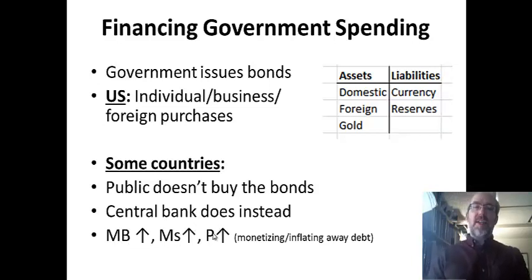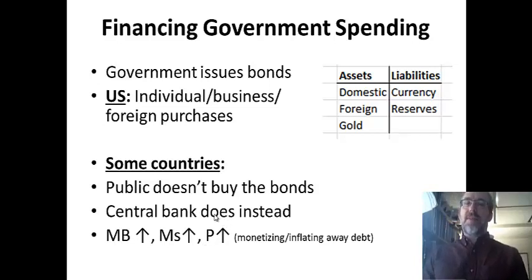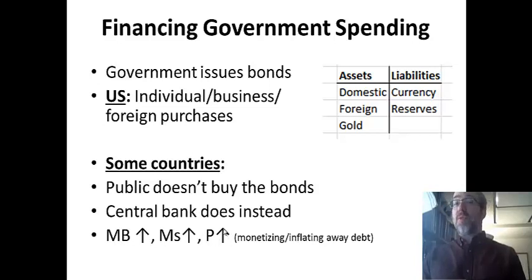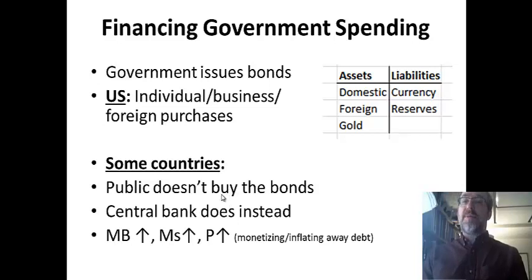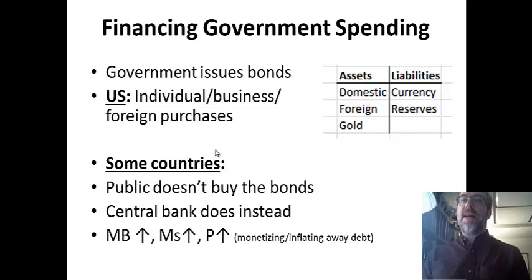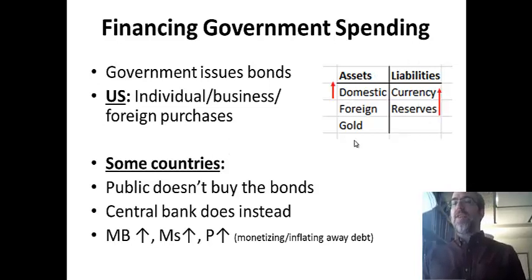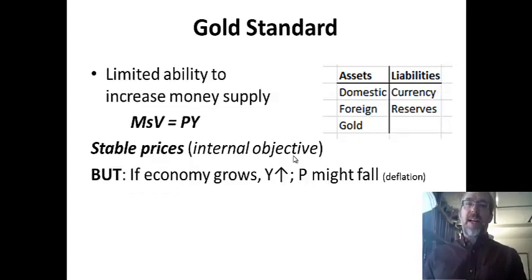The monetary base goes up, the money supply goes up, and via the equation of exchange, prices go up much more than output. A lot of times countries basically monetize the debt — they print money to pay for government spending, but it also inflates the debt away. As inflation rises, the real value of debt falls, so governments can borrow a bunch of money and then watch it lose value through inflation. A lot of times people don't like inflation and want something that limits the government's ability to issue bonds and buy them itself.